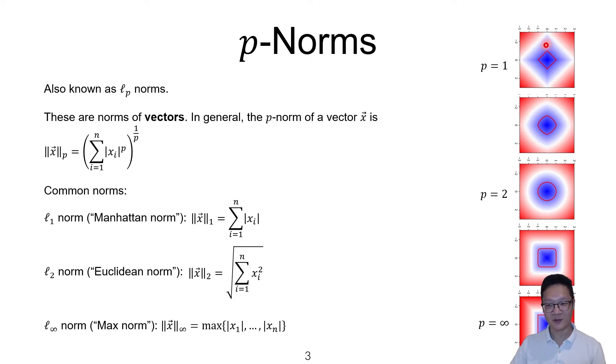On the top, we have the 1-norm. The red diamond is the set of vectors which have a 1-norm of 1. So you can kind of see that the 1-norm kind of has a different shape compared to the 2-norm. And then when p varies from 1 to 2, the shape also varies as well.